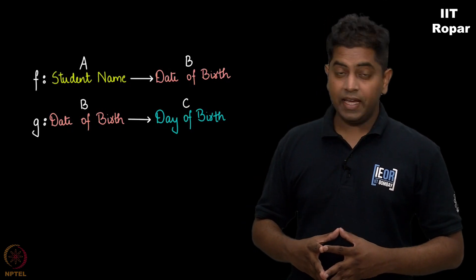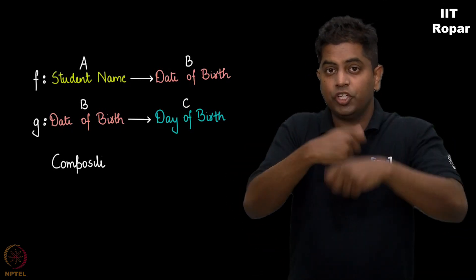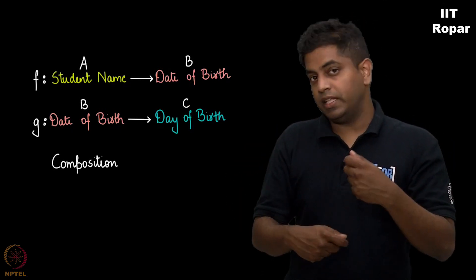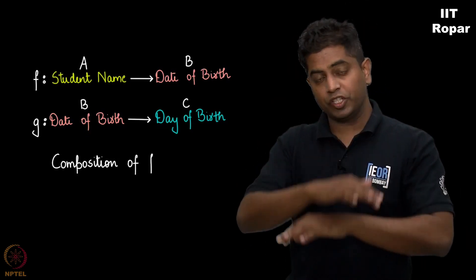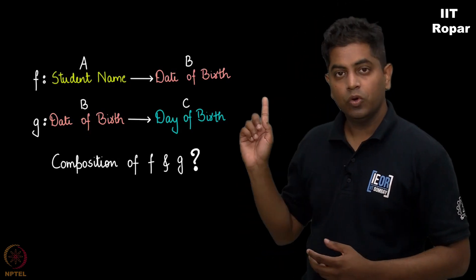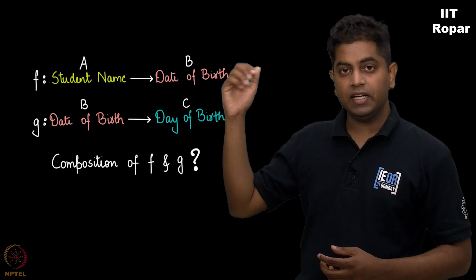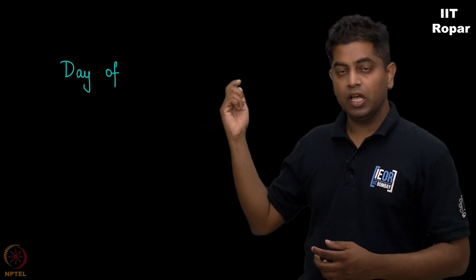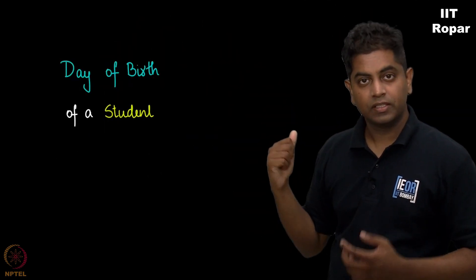What will you get if you take a composition — rather, a combination — of both the functions f and g? You can see what the day of birth of a student is, correct?